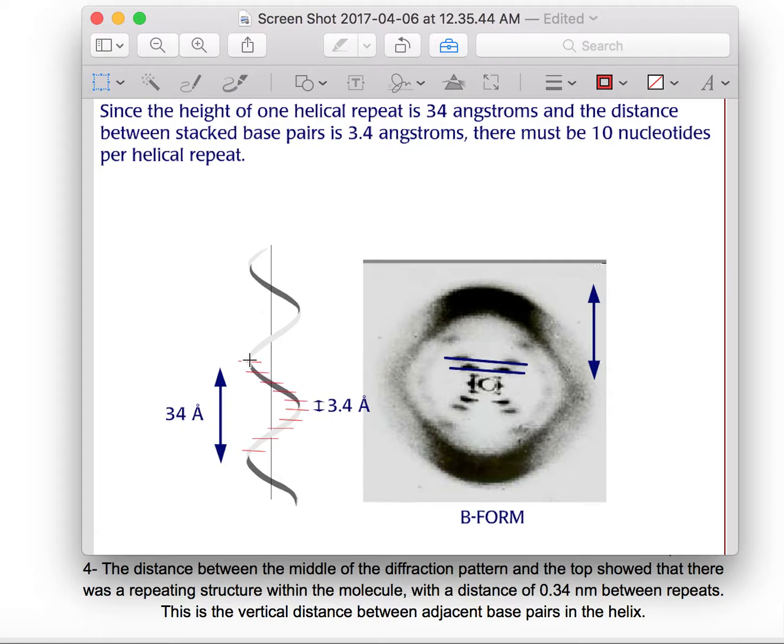There are 10 red lines here, implying that there are 10 nucleotides, because the distance between each red line is 0.34 nanometers and the distance between the entire thing is 3.4 nanometers.